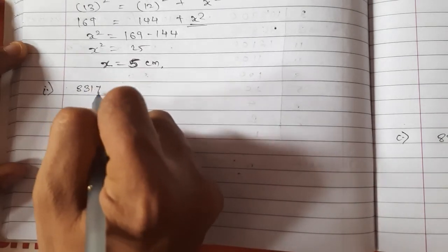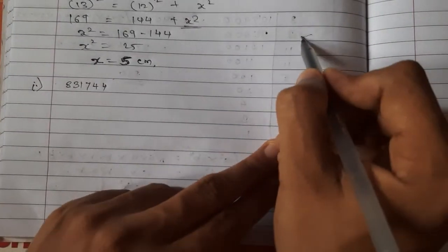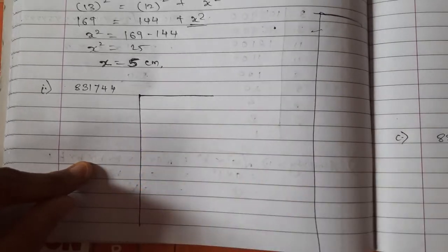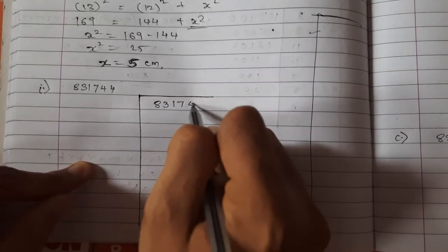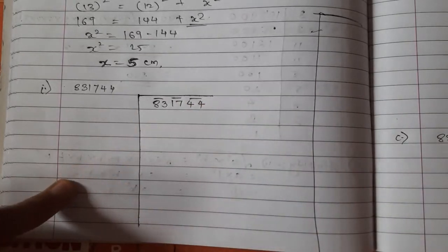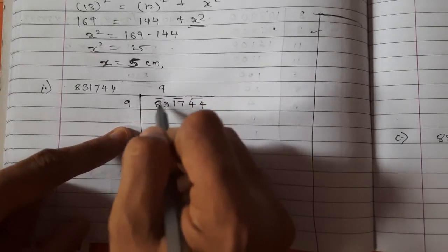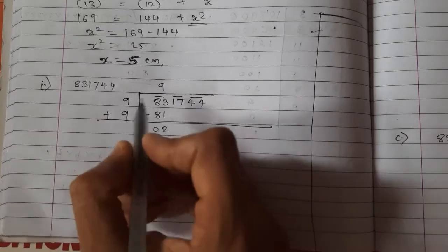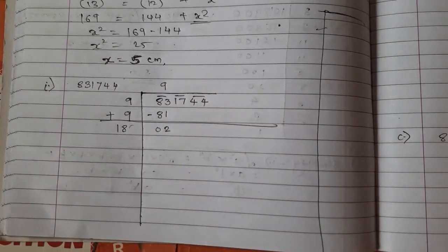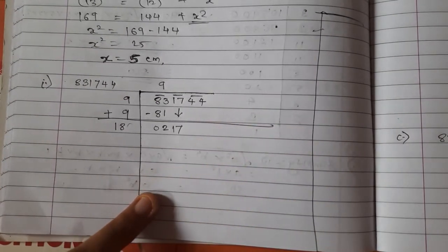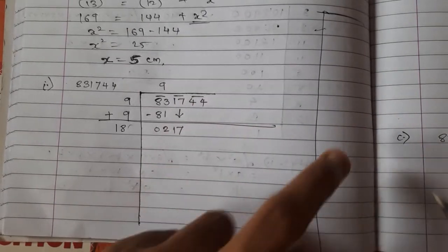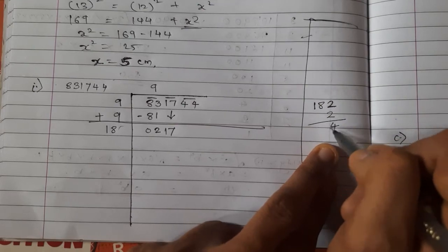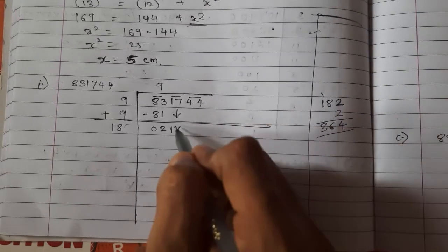Now let us do the last sum: 831744. This part I will use as rough column. Write the number and make groups: 83, 17, 44. The nearest perfect square to 83 is 81, since 9 × 9 = 81. Write 9 in the quotient three times, subtract: 83 − 81 = 2, bring down 17 to get 217. Write 18, take 2 down — if you write 2, multiply 182 × 2 = 364, but 364 is bigger than 217, so take 1.